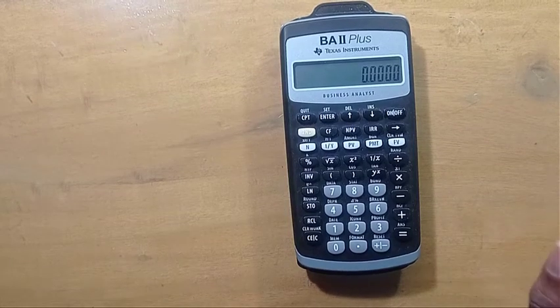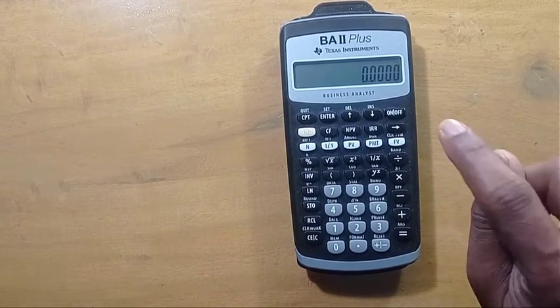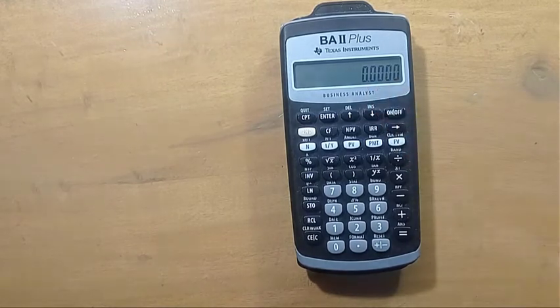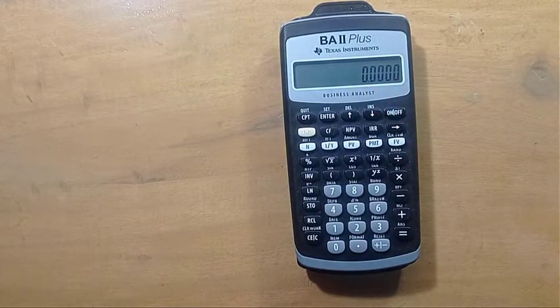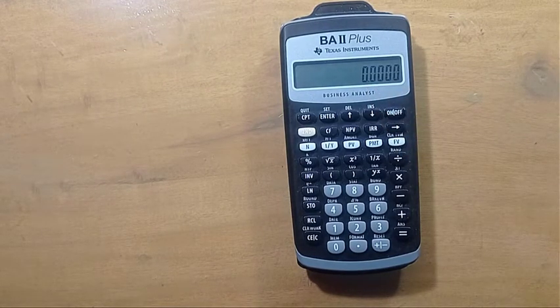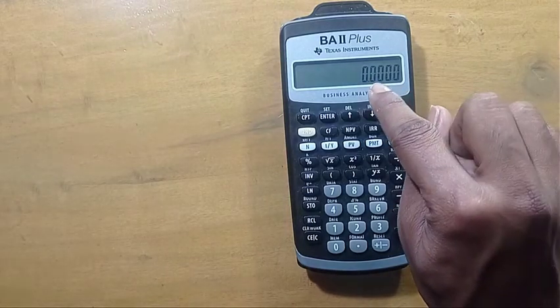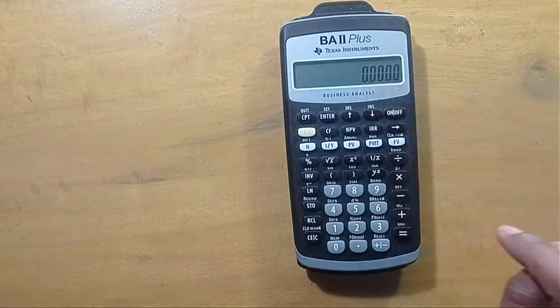Today I'll show you how you can change the number of digits after the decimal point in the BA II Plus financial calculator. See here we have four digits after the decimal point.